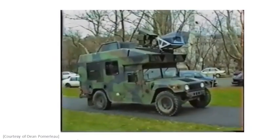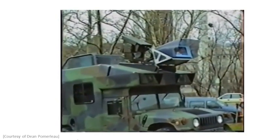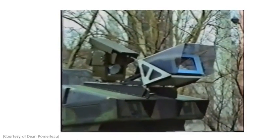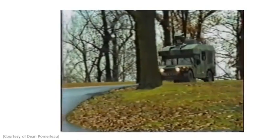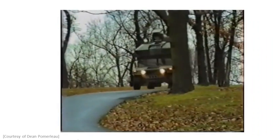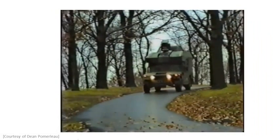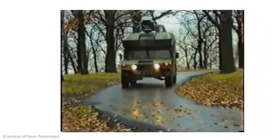Alvin is a system of artificial neural networks that learns to steer by watching a person drive. Alvin is designed to control the NavLab 2, a modified Army Humvee equipped with sensors, computers, and actuators for autonomous navigation experiments.